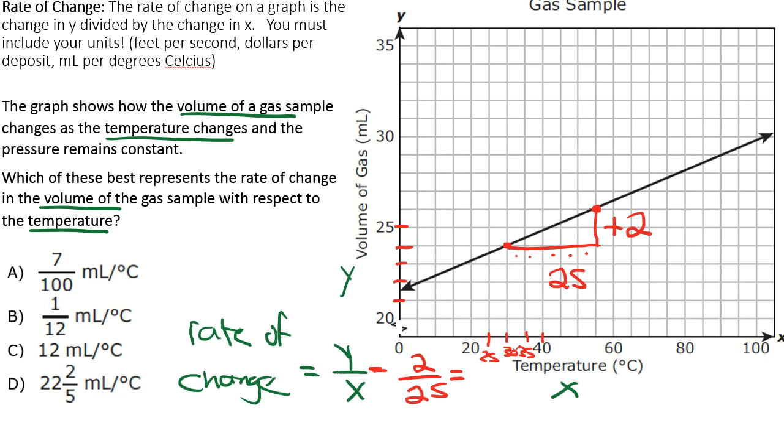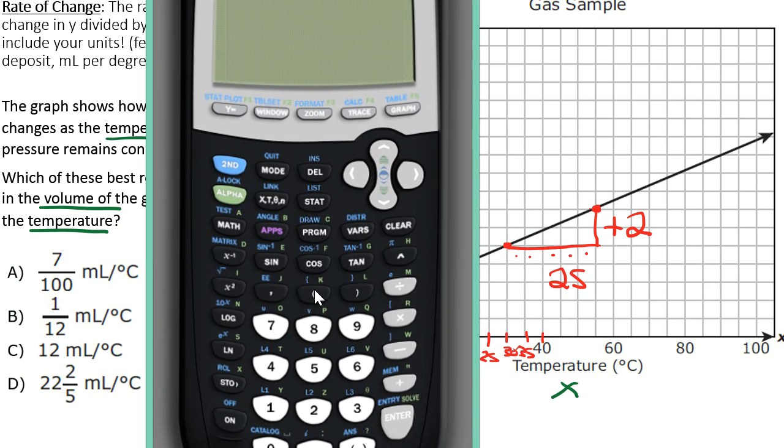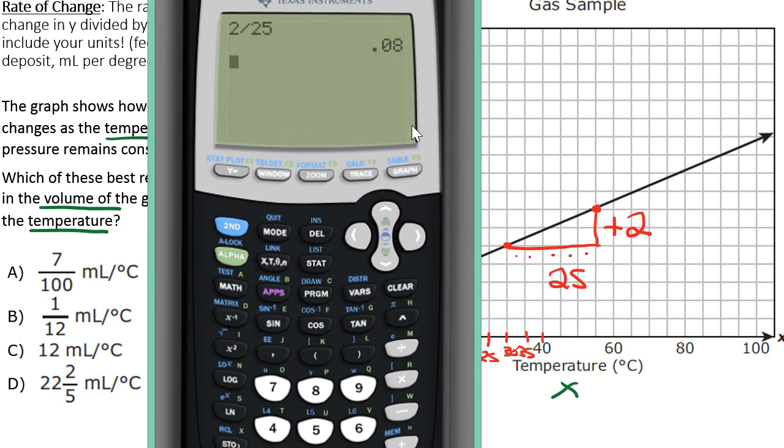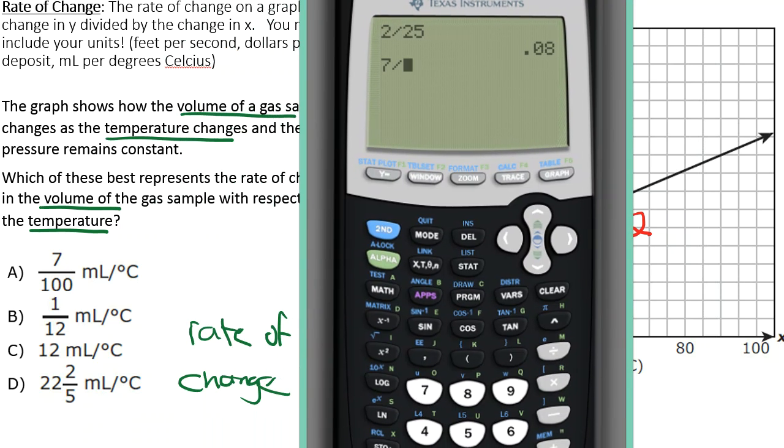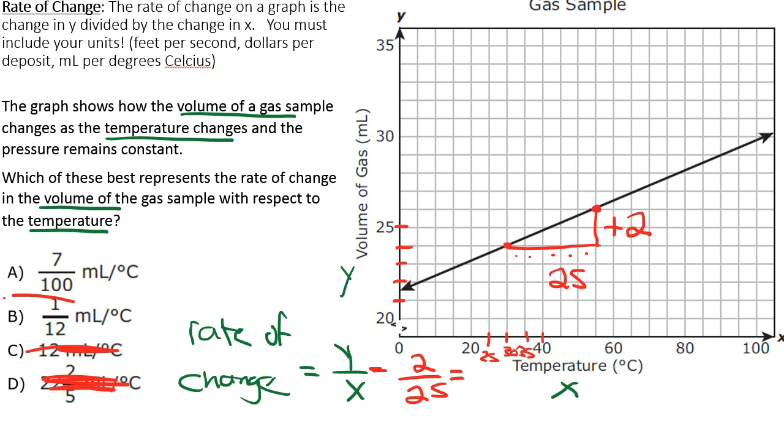Let's see what that is. Two over 25. We can do that in our calculator. Get your calculator out. And you can do two divided by 25. So in your calculator, you got two divided by 25. You can press enter. It looks like it's 0.08. Now again, I guesstimated as best I could on the graph. I got 0.08. Let's see if any of these answers gets us really close to 0.08. Seven over 100. Press enter. That's 0.07. That's really close. One divided by 12. That's 0.083. Oh dear. They're both really close. 12 is going to be way too big. And so is 22 and 2 fifths. So you know it has to be 7 over 100 or 1 over 12. 1 over 12 is closer to the actual answer or the answer we got. So B looks like it's going to be correct.